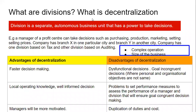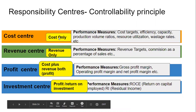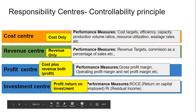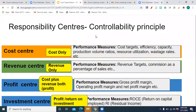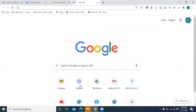That's the responsibility accounting system. There's a slide on centralization and decentralization — the advantages and disadvantages. The responsibility centers are: cost center, which is only responsible for cost; revenue center, responsible for revenue; profit center, responsible for cost as well as revenues; and the investment center manager, who is ultimately responsible for everything and wants to generate a return on investment. I will just take you to the whiteboard again.